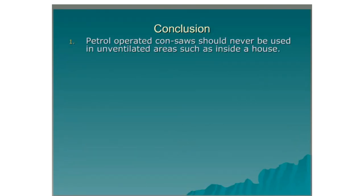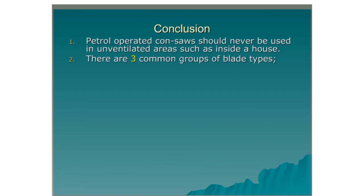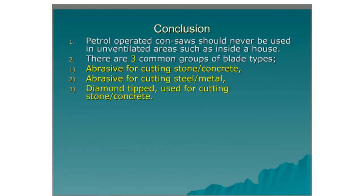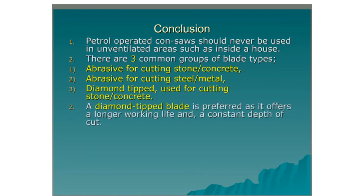Conclusion. Petrol operated con saws should never be used in unventilated areas such as inside a house. There are three common groups of blade types: one, abrasive for cutting stone and concrete; two, abrasive for cutting steel and metal; three, diamond tipped for cutting stone and concrete. A diamond tip blade is preferred as it offers a longer working life and a constant depth of cut.